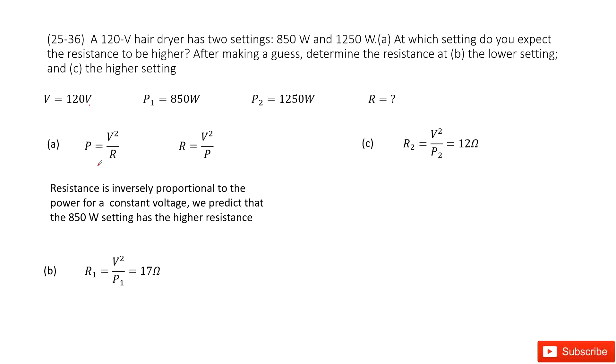From this equation, you can convert it, reorganize it, and then get the function as resistance R equals V squared divided by P.